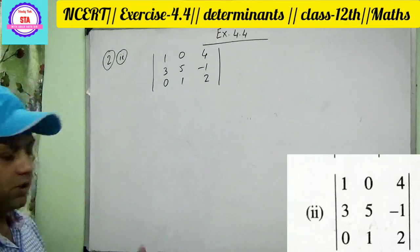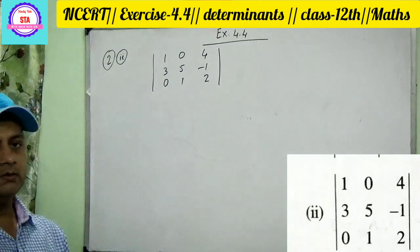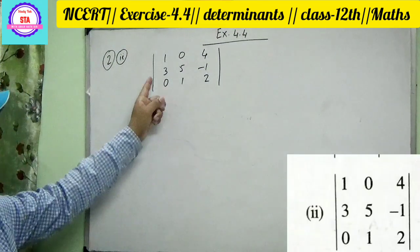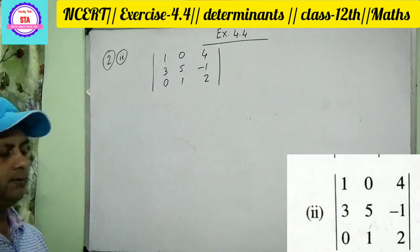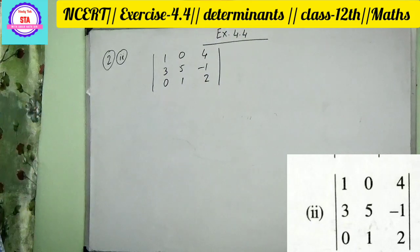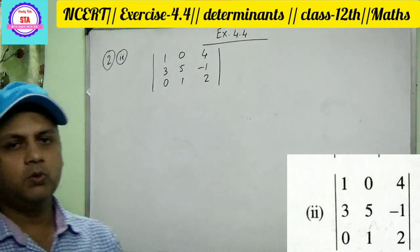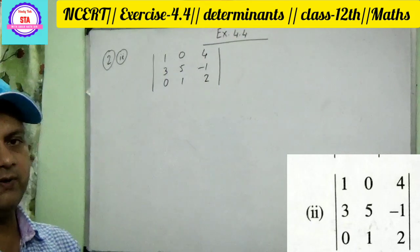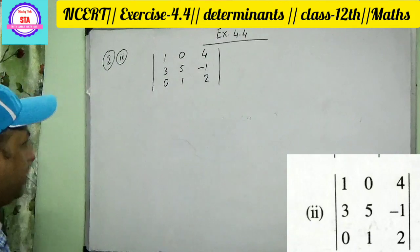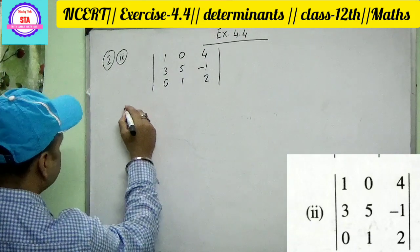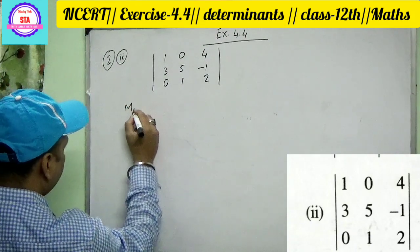Next question on screen. The matrix is: 1, 0, 4, 3, 5, 1, 0, 1, 2. You need to find the minor and cofactor for this matrix. The minor and cofactor process is the same as before.